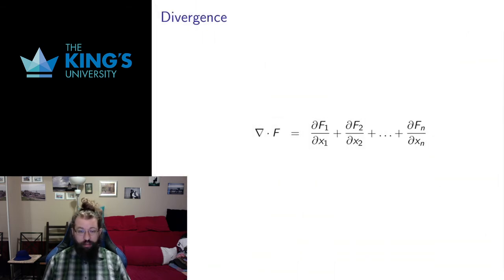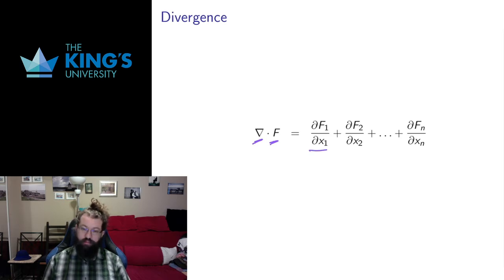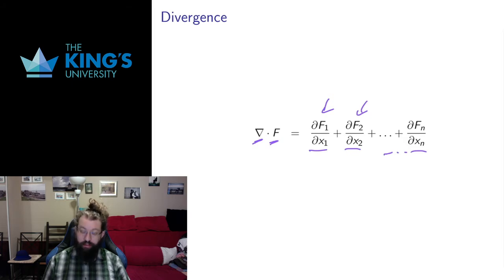The second thing I want to define is the dot product. I can take the dot product of the differential operator NABLA with a vector field F. That's going to be the operator in the first variable acting on the first component, plus the operator in the second variable acting on the second component, all the way to the operator in the last variable acting on the last component. This is called the divergence of the vector field.